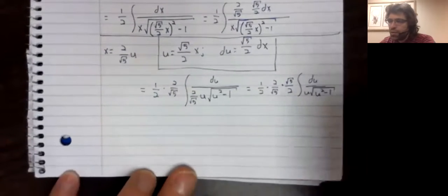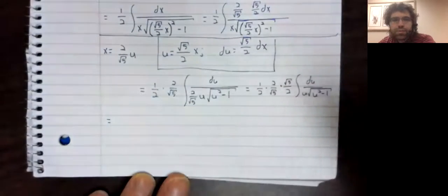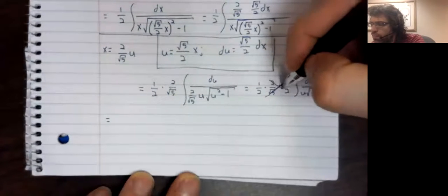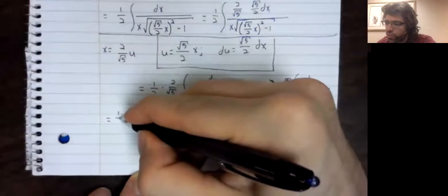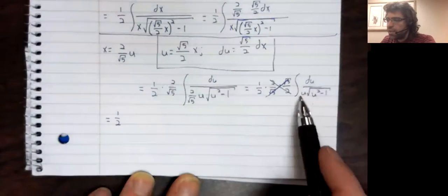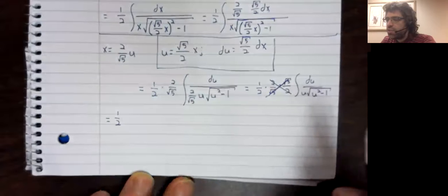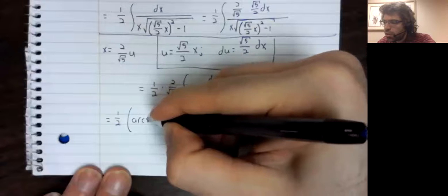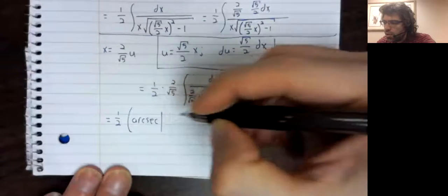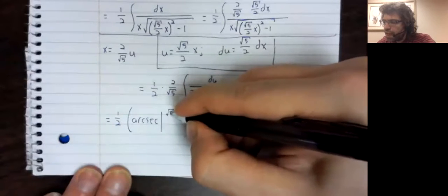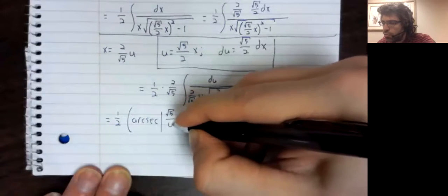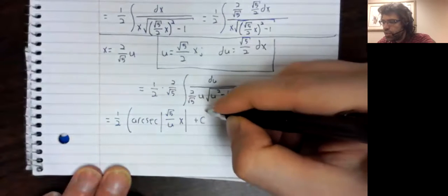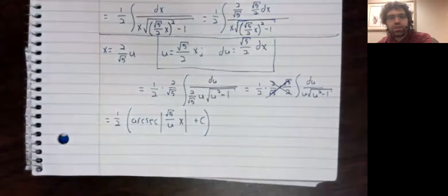And now we just need to finish up. Outside of the integral, terms cancel. And then we take this integral. It's the arc secant of the absolute value of u, remember? Plus our constant of integration.